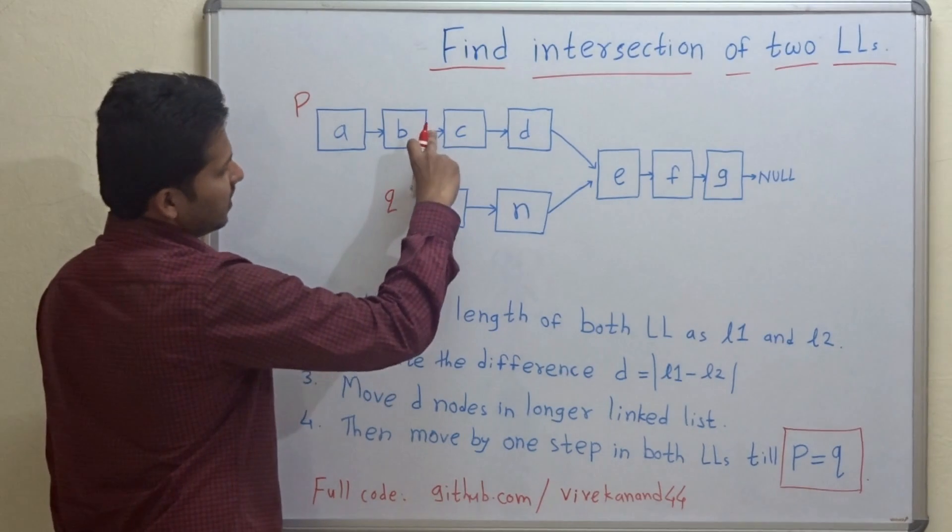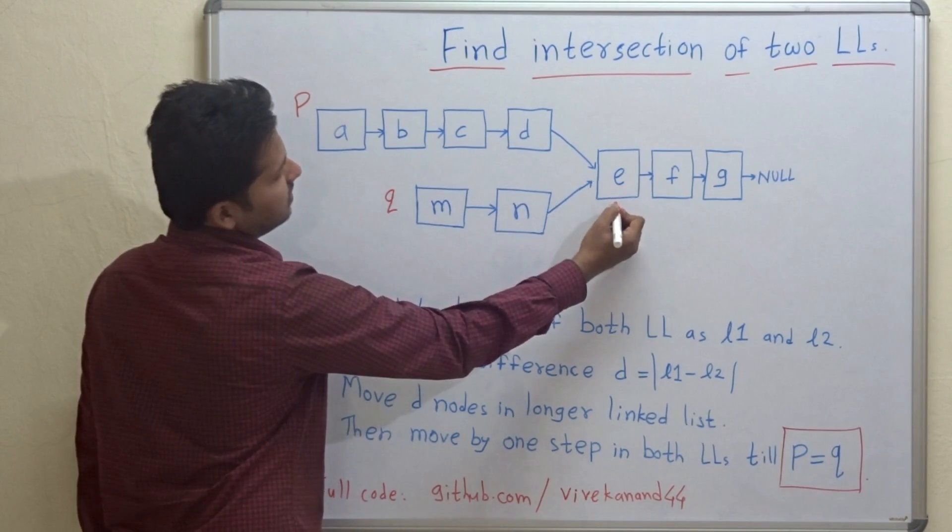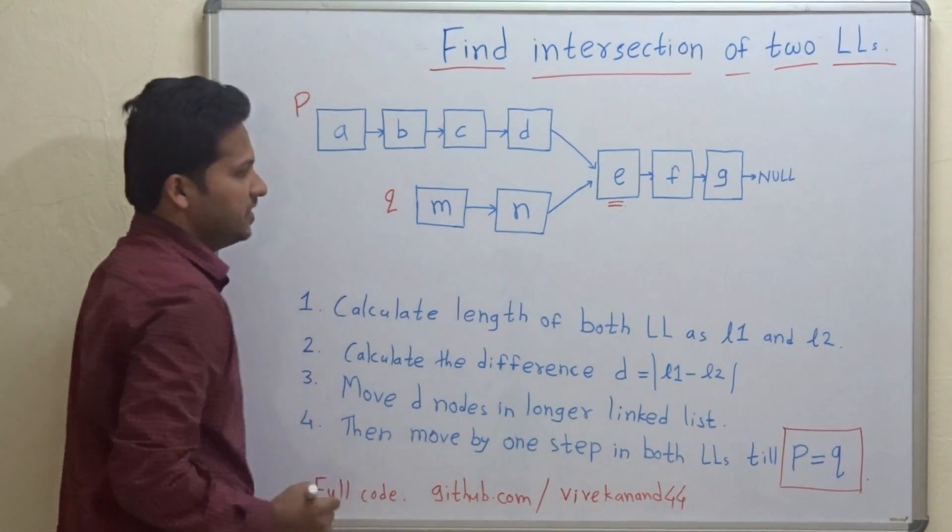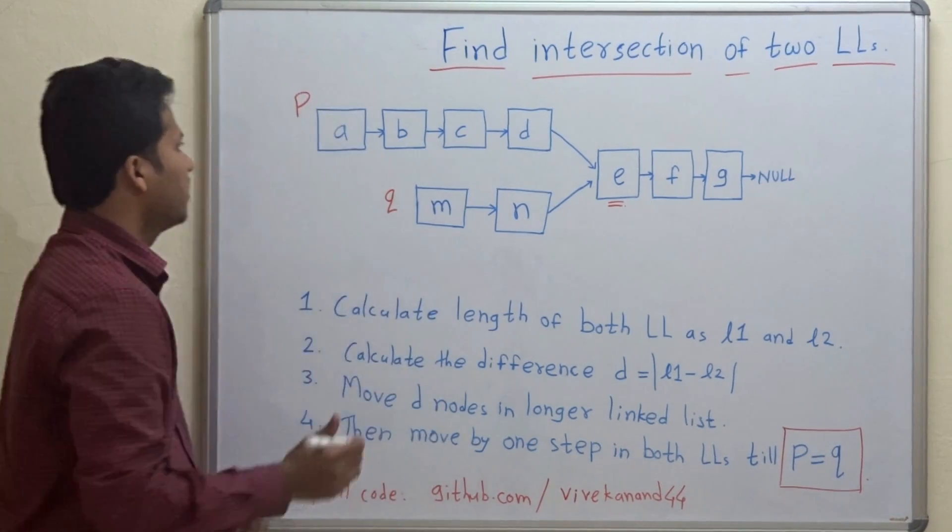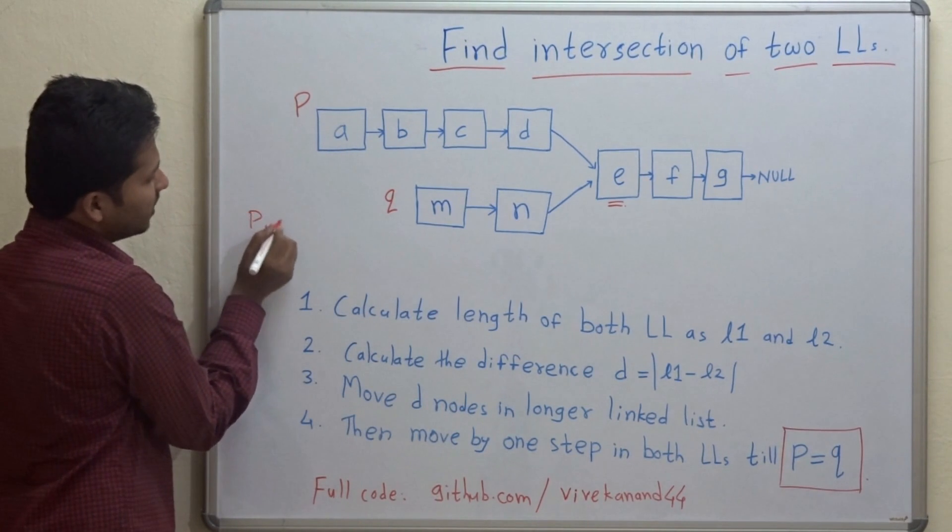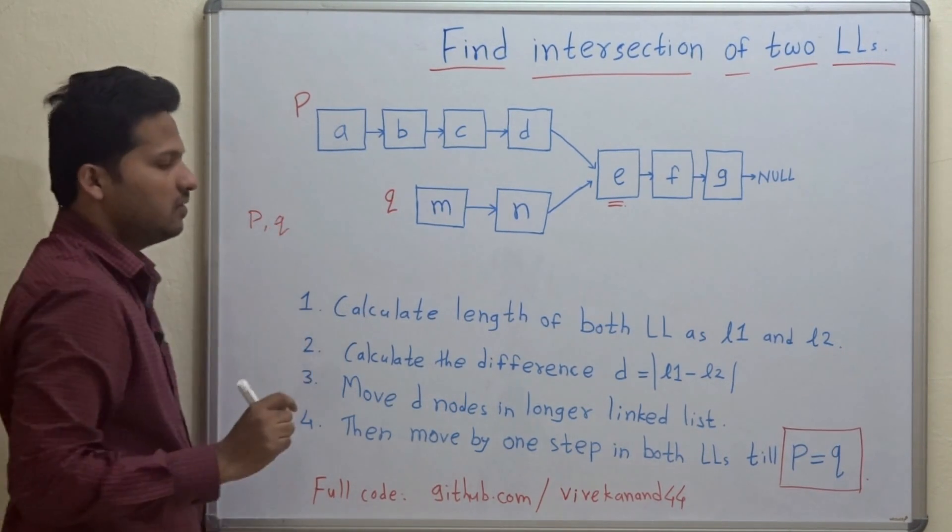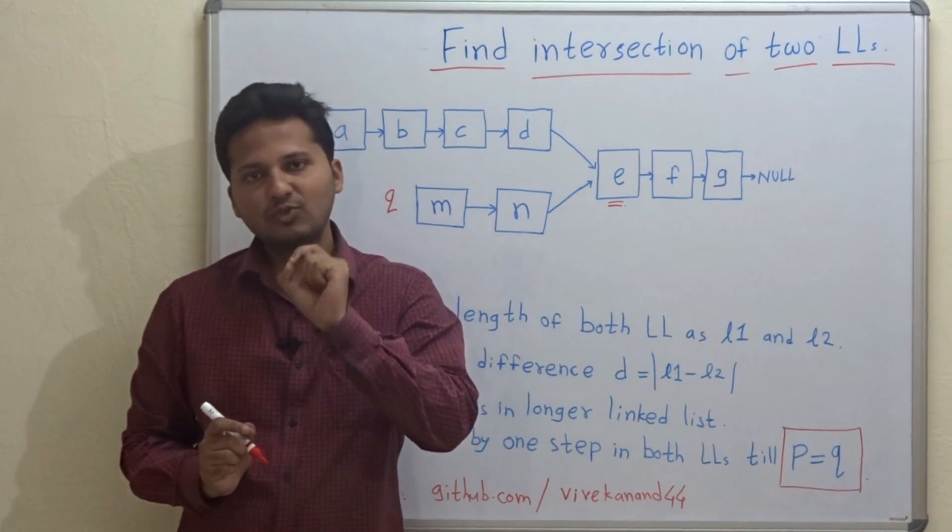And these two linked lists intersect at one point and E is the intersection point. So if you are given the heads of two linked lists, means if you are given these pointers, that is P and Q, then how will you find out the intersection point of these two linked lists?